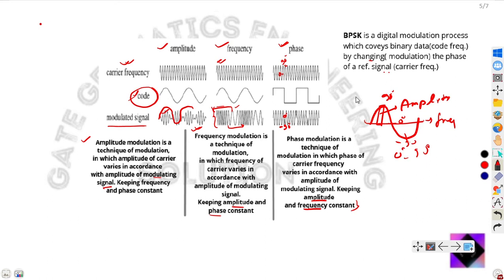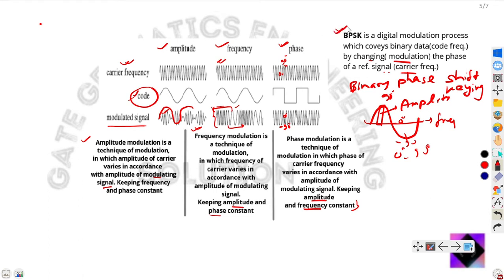For satellite navigation, the satellite signals are modulated by phase modulation — more specifically BPSK modulation, that is Binary Phase Shift Keying. BPSK is a digital modulation process which conveys binary code by changing the phase of the reference signal. That is the BPSK modulation technique.